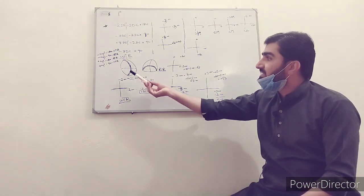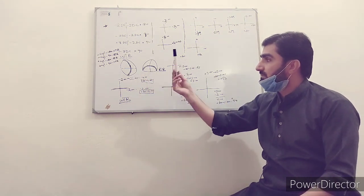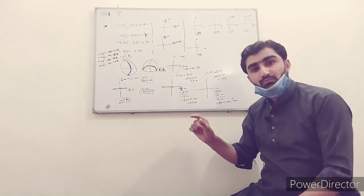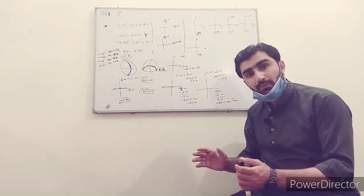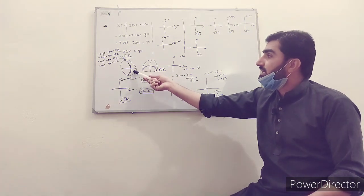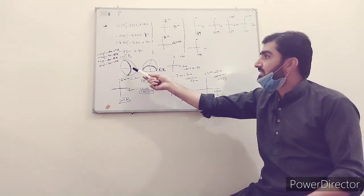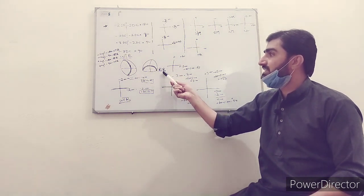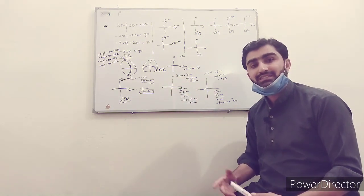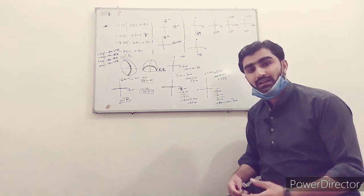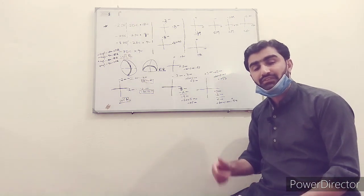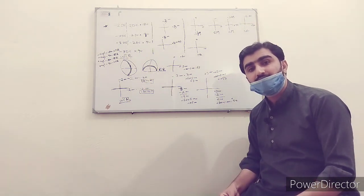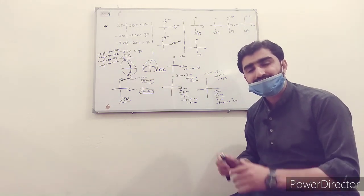There are key points to keep in mind. The definition: the meridian which is more curved has more power. If the vertical meridian is more curved, that is with-the-rule astigmatism. If the horizontal meridian is more curved, that is against-the-rule astigmatism. These are the definitions of with-the-rule and against-the-rule astigmatism.